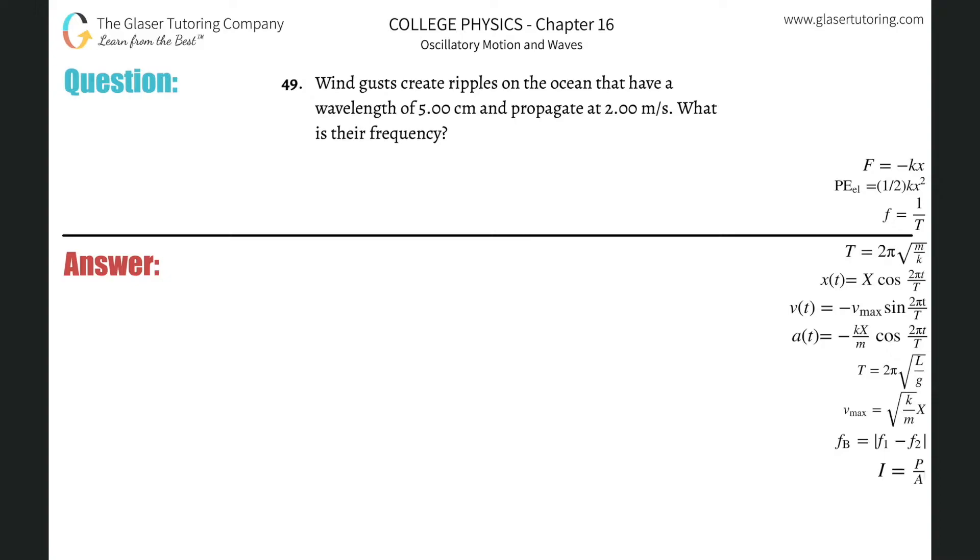49. Wind gusts create ripples on the ocean that have a wavelength of 5 centimeters and propagate at 2 meters per second. What is their frequency?